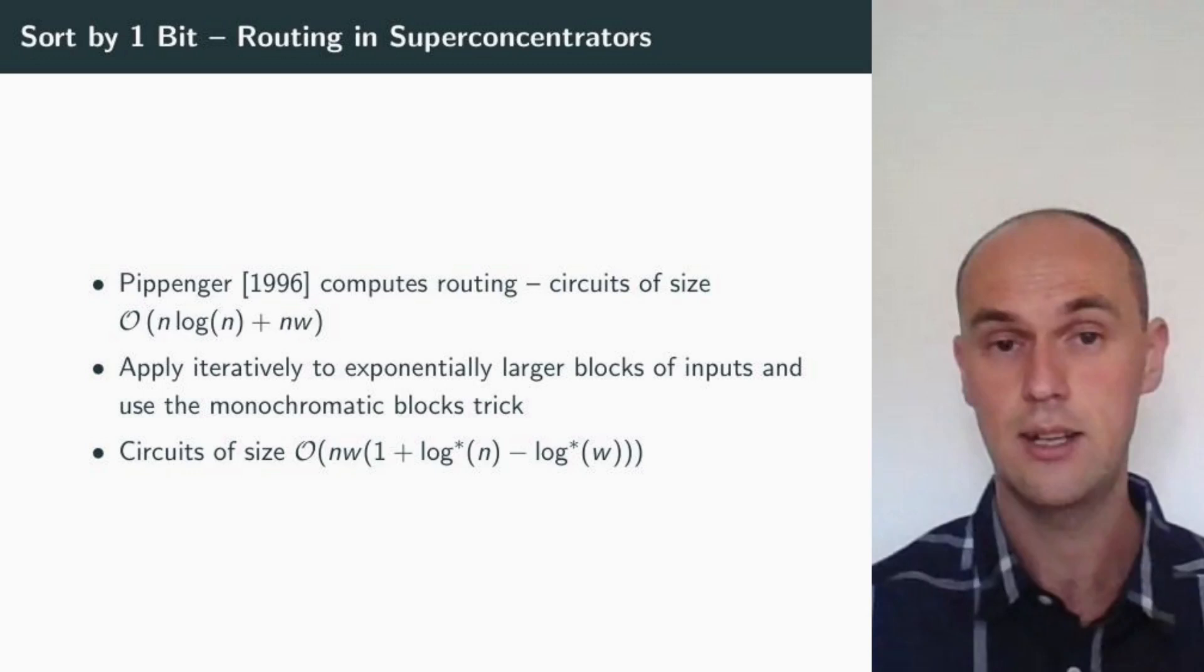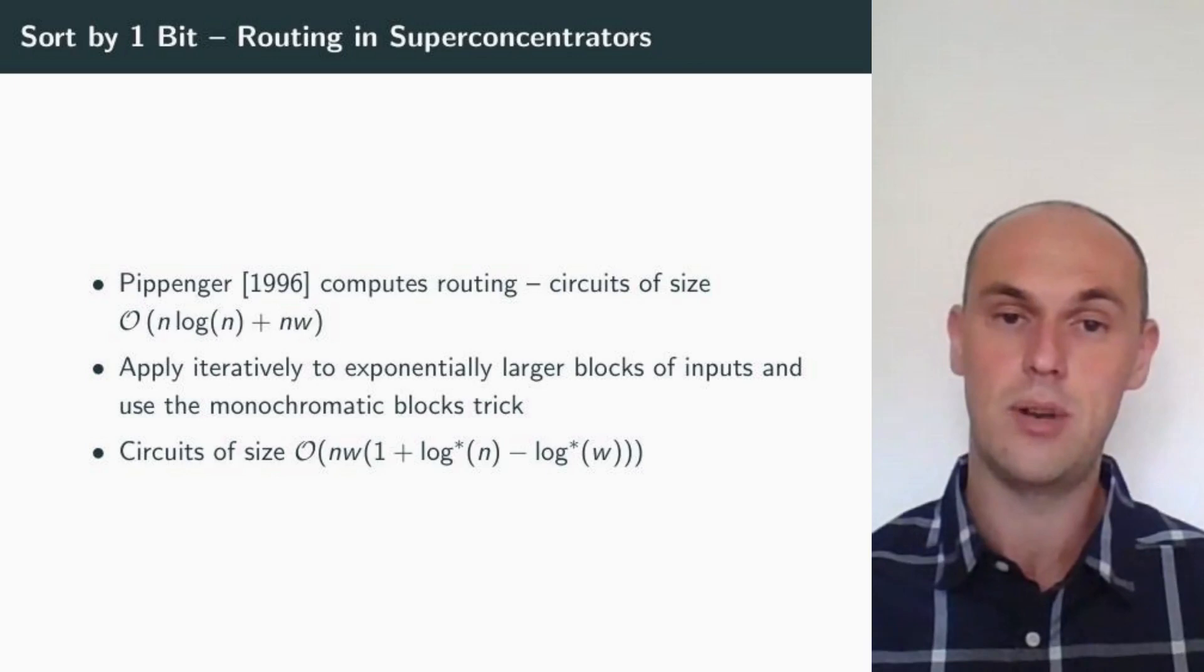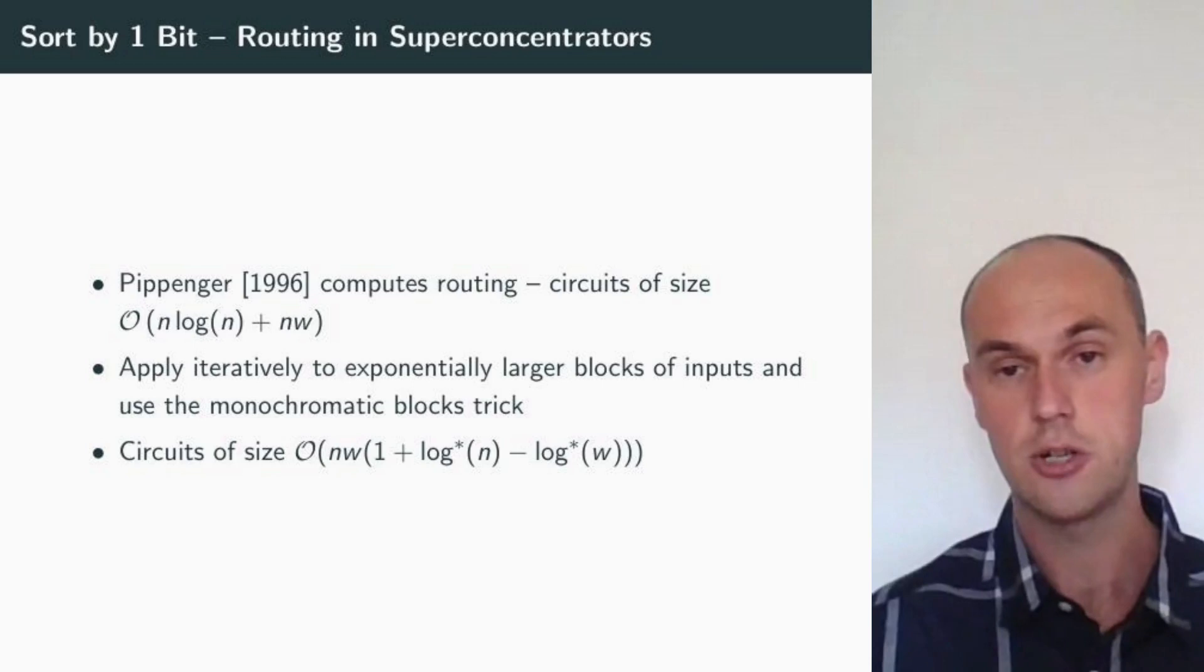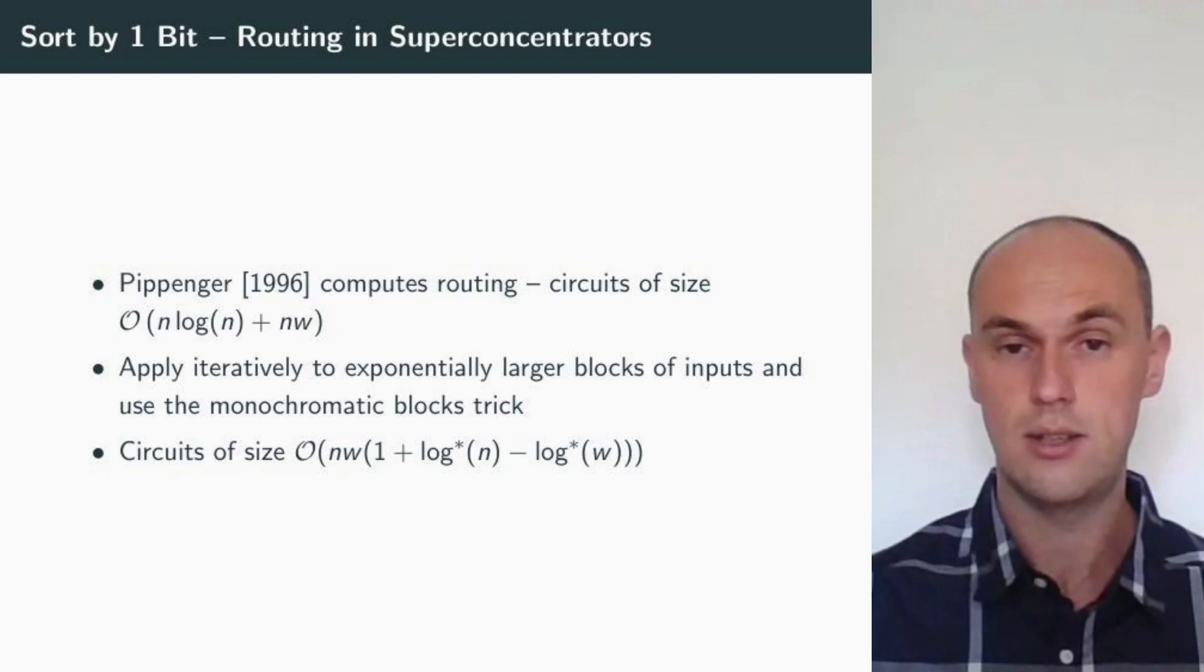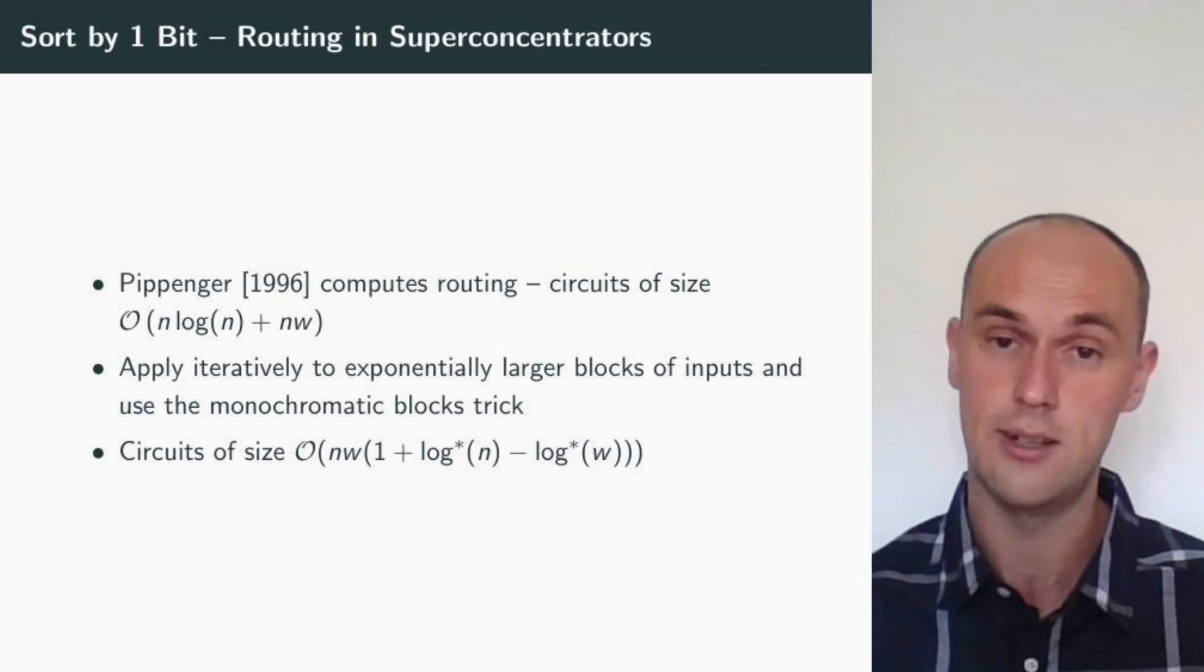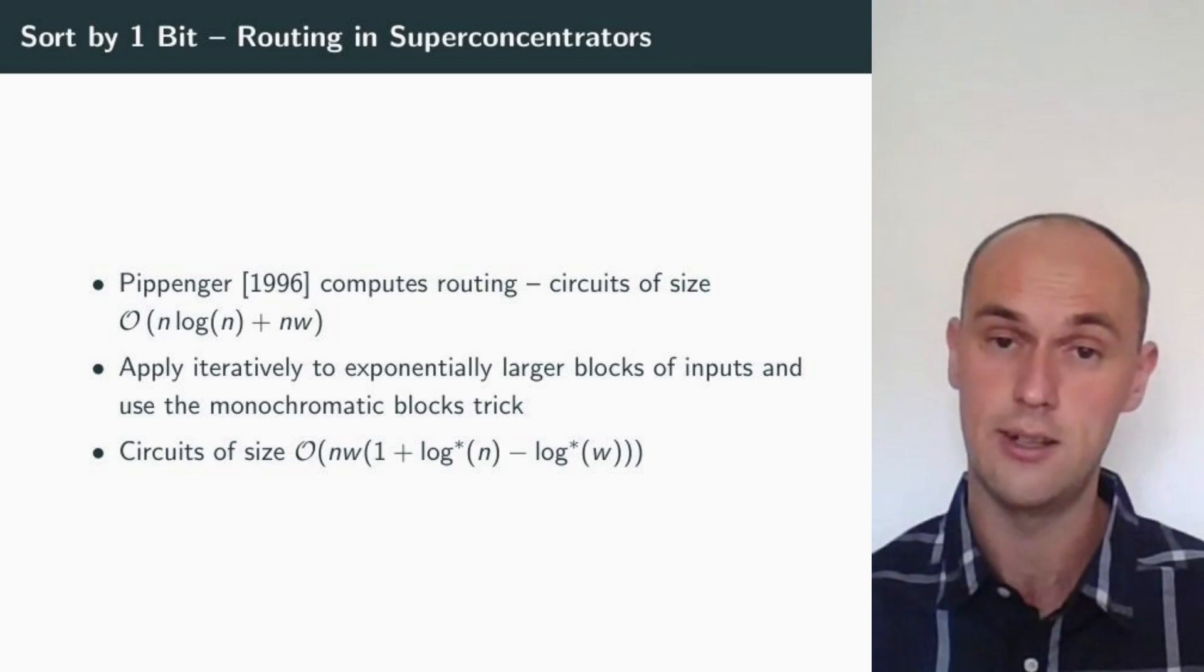However, it is easy to turn this result into circuits of size n log n plus n w. The n log n part is for the route finding, for finding the disjoint paths, and n w is for actual routing of the inputs each of length w bits. However, this is again relatively large. Thus, we apply this circuit iteratively to exponentially larger and larger blocks of inputs. And use the monochromatic blocks trick to actually come up with a circuit of size n w times a factor in iterated logarithm. And the exponentially larger and larger blocks are the reason why we have the iterated logarithm term.